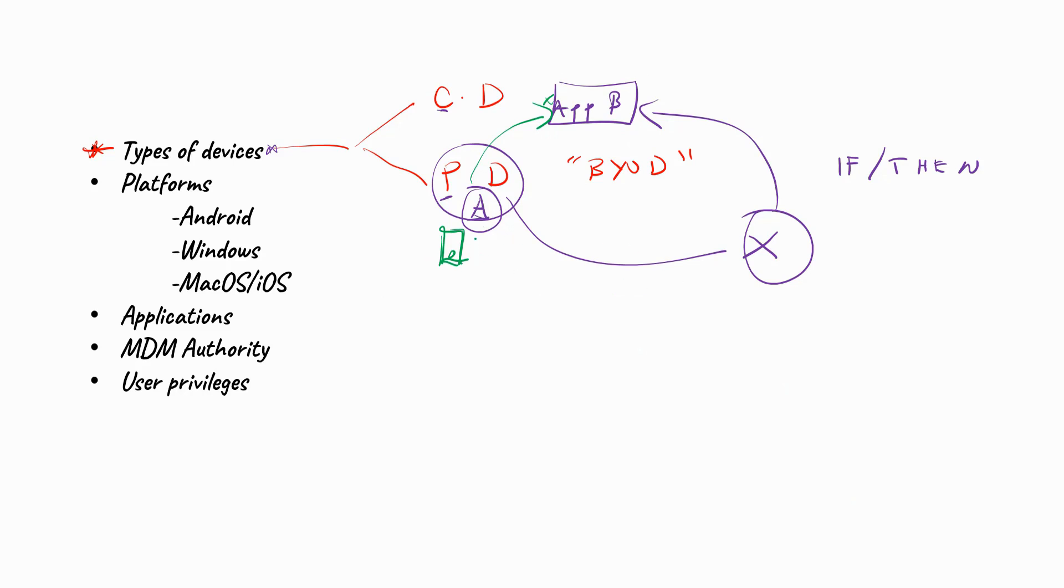However, if the device is in an unknown location, such as location X, regardless of how compliant that device is, the rest of the policies deny access to this particular application. So whether the device has the latest version of operating system, it is not jailbroken, it has low levels of risk, that device will be outrightly denied access. And that is the beauty of conditional access policies.